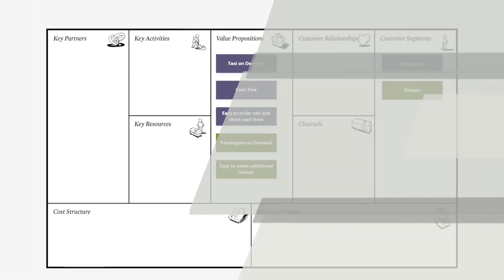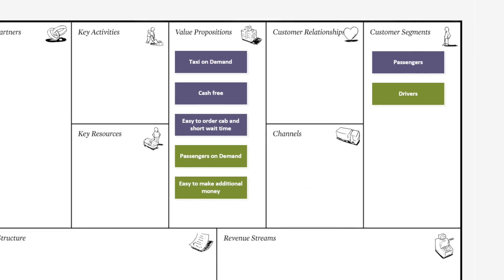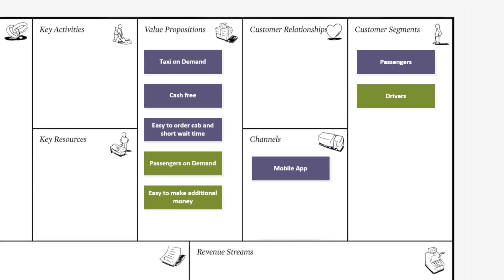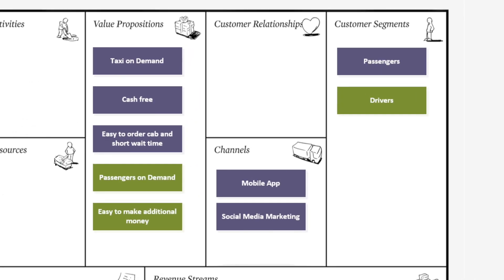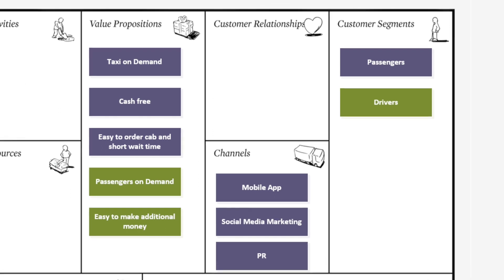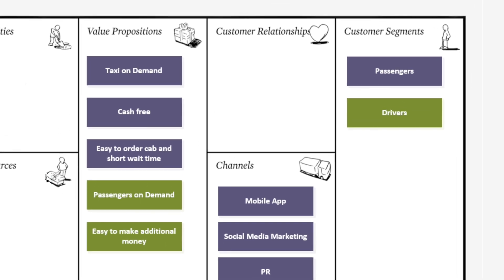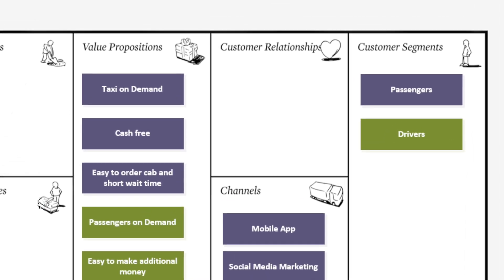The next step is to understand how your business is going to link with the customer segment. Remember that not all users are equal, especially when your business is Uber for X. Service providers and service consumers may require different channels of distribution.